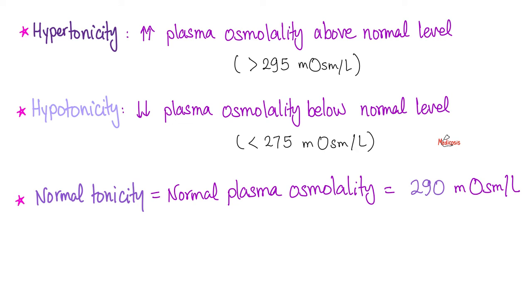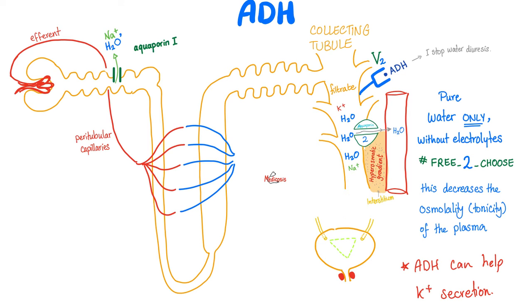Your normal plasma osmolarity is about 290. Therefore, if your plasma is more concentrated than this, we call it hyperosmotic or hypertonic. If it's less concentrated, we call it hypoosmotic or hypotonic.